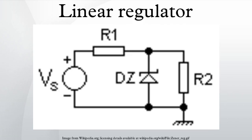In electronics, a linear regulator is a system used to maintain a steady voltage. The resistance of the regulator varies in accordance with the load, resulting in a constant output voltage. The regulating device is made to act like a variable resistor, continuously adjusting a voltage divider network to maintain a constant output voltage, and continually dissipating the difference between the input and regulated voltages as waste heat.